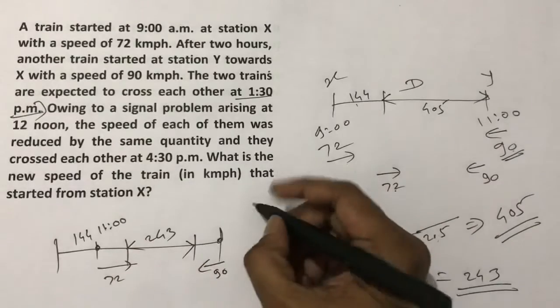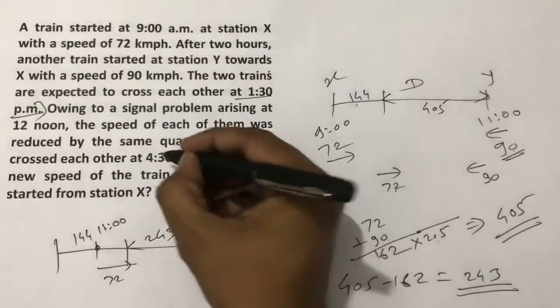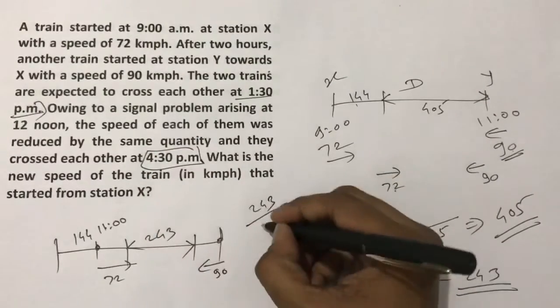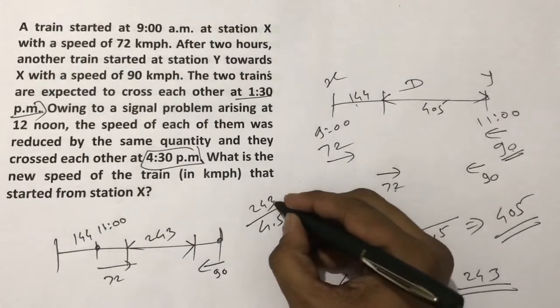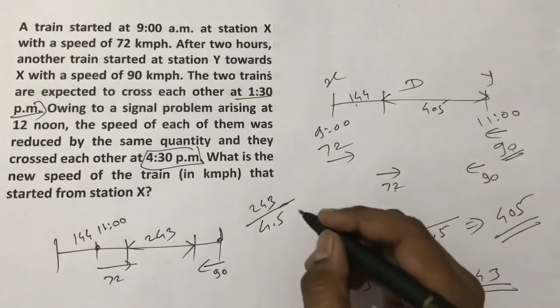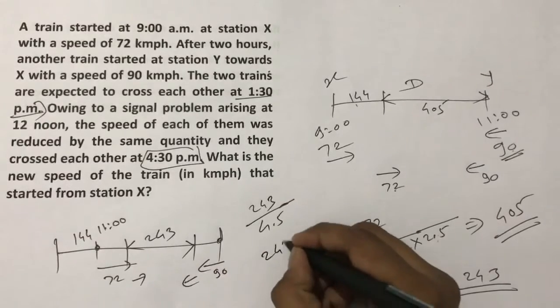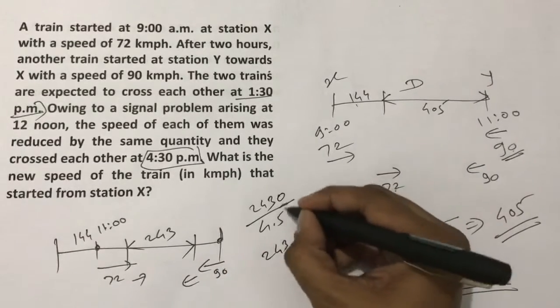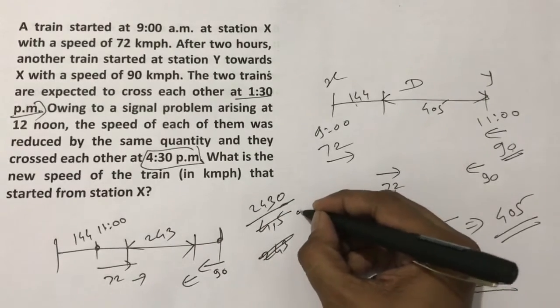It's taking them 4.5 hours, because from 12 to 4:30 they are meeting. So for this 243 km remaining, they are now taking 4.5 hours. The new relative speed of these two trains is 243 divided by 4.5, which is 2430 by 45.